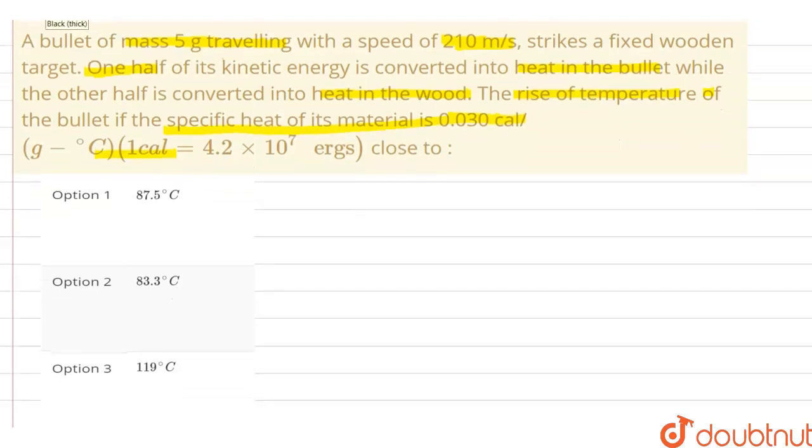So what is happening here is here's our wooden target, a bullet is hitting this target, and initially let's just say the kinetic energy is half mv square. So after it hits the surface...